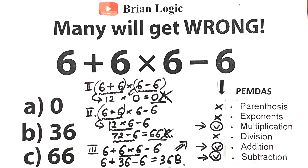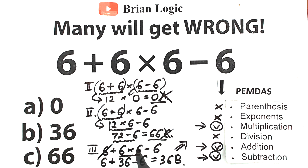Here's a really great trick: as you can see, we have a leading 6 and a trailing minus 6, so those cancel each other out. That means the correct answer is simply 6 times 6 equal to 36 — only the multiplication remains.